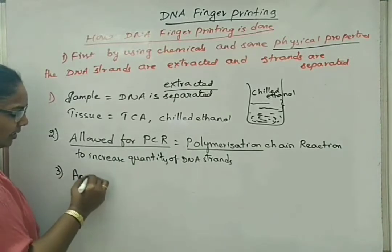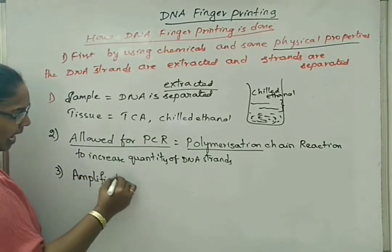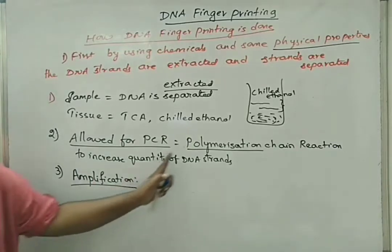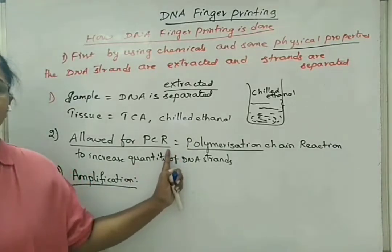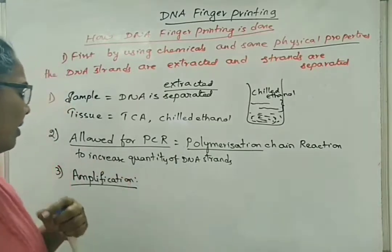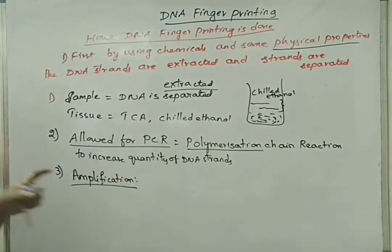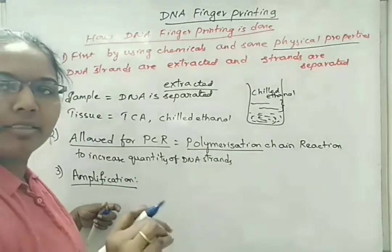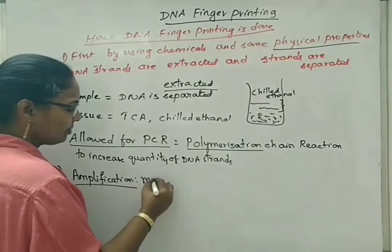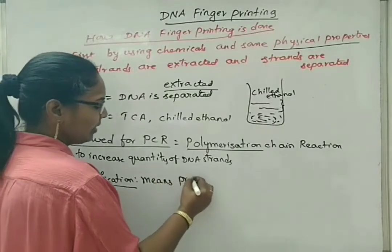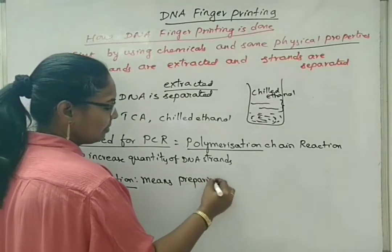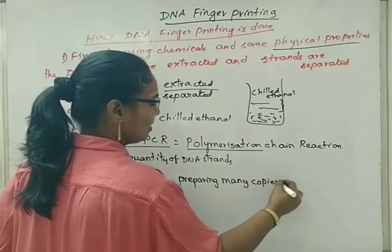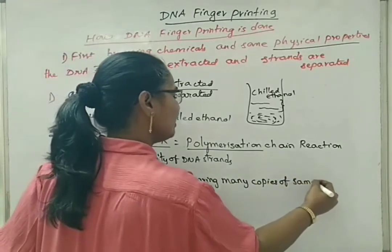Next is amplification, which is also one of the steps in PCR technology. In amplification, we are making the same number of DNA copies — not any different ones. This method means preparing many copies of the same DNA sequence.